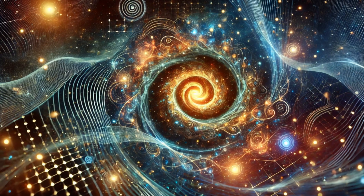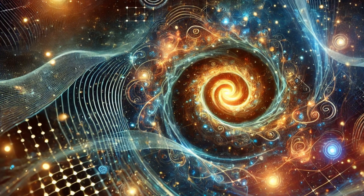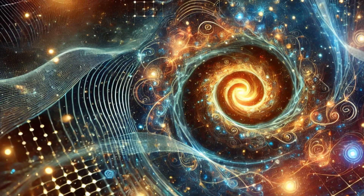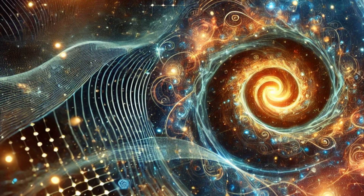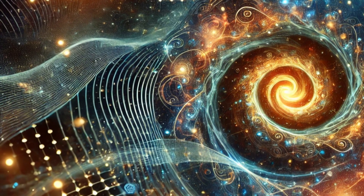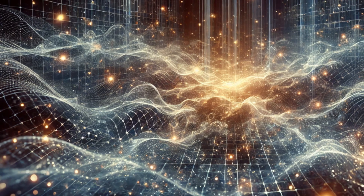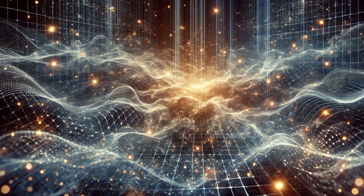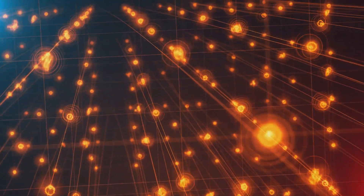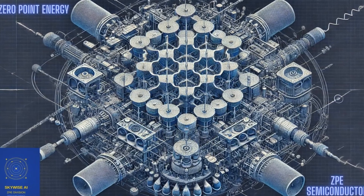Fractal geometry is all about patterns that repeat themselves at different sizes. These patterns can be found everywhere in nature, from the branching of trees to the formation of snowflakes, and even in the structure of our lungs. The concept of fractals extends into mathematics and computer-generated imagery, where complex equations can create stunning visual representations of these repeating patterns. The MEQ suggests that the structure of the quantum vacuum — the lowest energy state — might have fractal properties. This is a groundbreaking idea, because it implies that the seemingly random fluctuations in the quantum vacuum are not entirely random, but follow a fractal pattern.